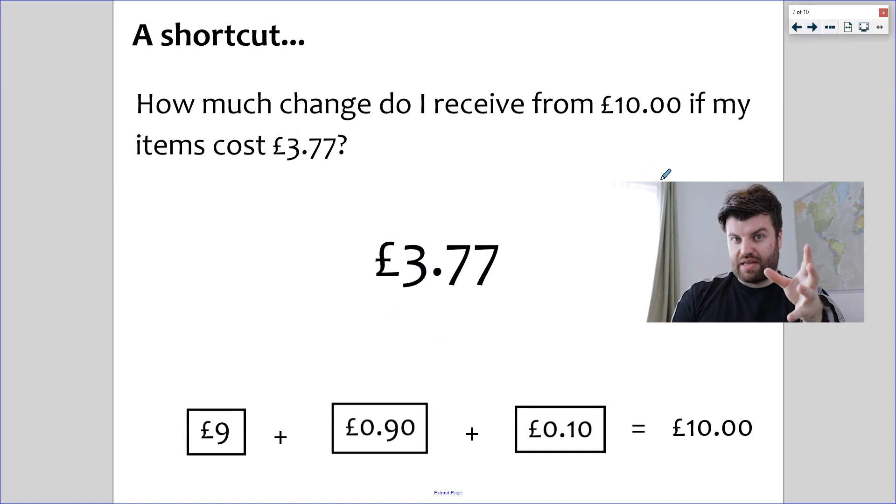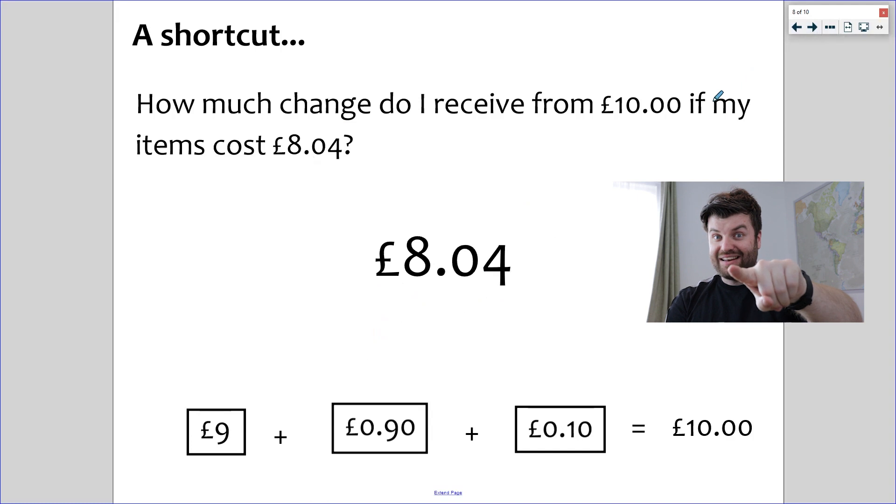£3.77. Okay. Make 9, make 9, make 10. 3 plus 6 is 9. 7 plus 2 is 9. Finally, 7 plus 3 is 10. £6.23. Look how quick we can solve it now that we know our little trick. And the last one to do really quickly. Hopefully, some of you are doing this in your head again. 8 pounds, make 9, which is 1. 0, make 9, which is 9. And then, finally, that last 10 pence to tip us to £10. 4 plus 6. The answer is £1.96.